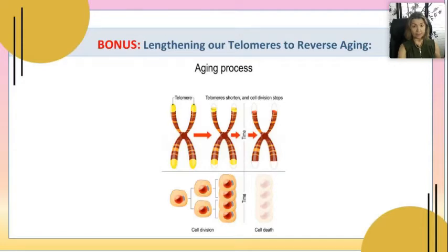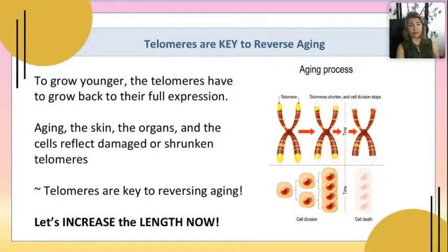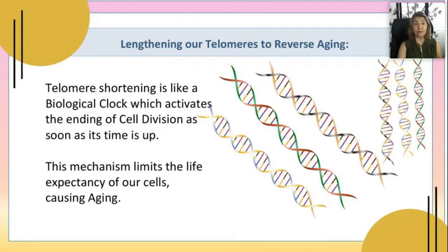About 99% — let's just continue here while we work on that last little bit. To grow younger the telomeres have to grow back. The aging of the skin, the organs, the cells — that's what we're working on. So, lengthening the telomeres to reverse aging: telomere shortening can be seen as a biological clock that activates the ending of cell division as soon as its time is up. But that's not working anymore for us — we are being forever young and ageless.